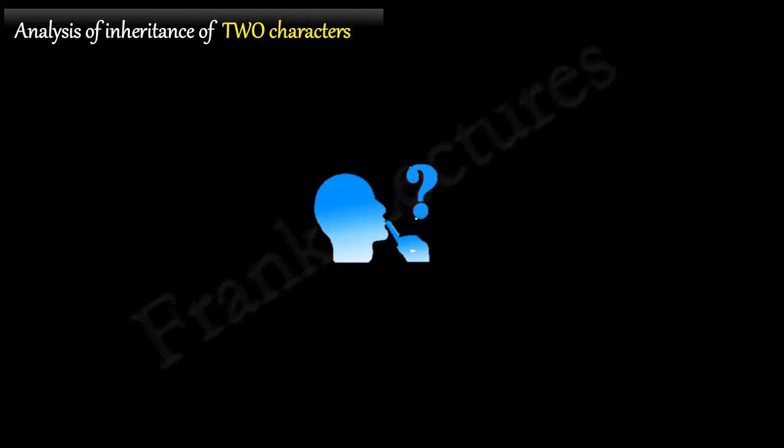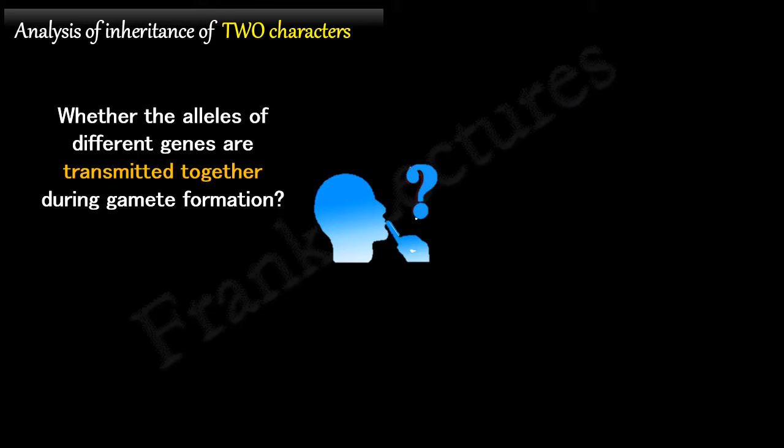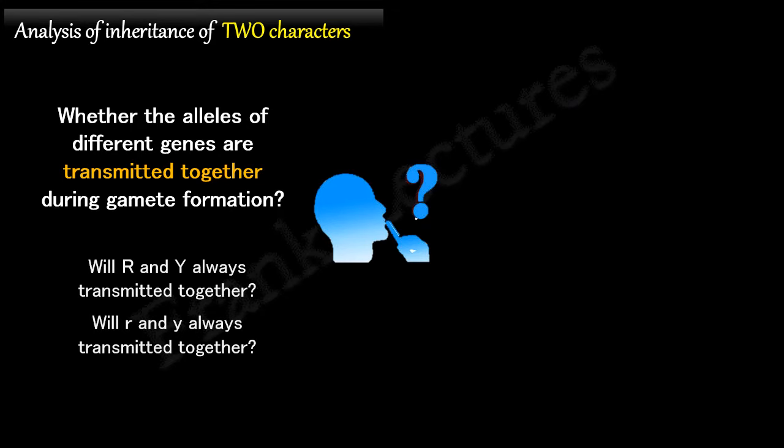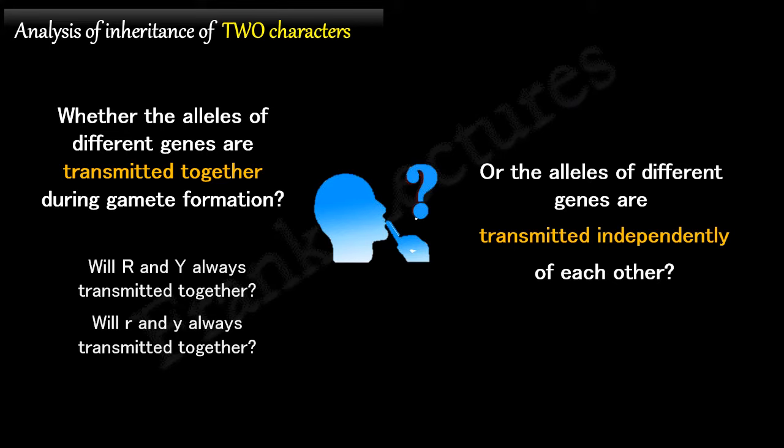Mendel's question was whether the alleles of different genes are transmitted together during gamete formation in the same combination that the original parent had. In other words, will dominant R and Y alleles always be transmitted together generation after generation? And will recessive R and Y alleles always be transmitted together? Or are the alleles of different genes transmitted independently of each other?